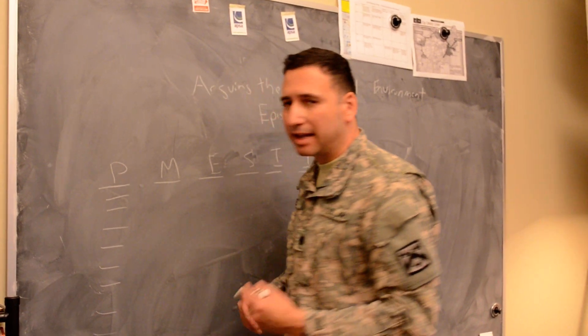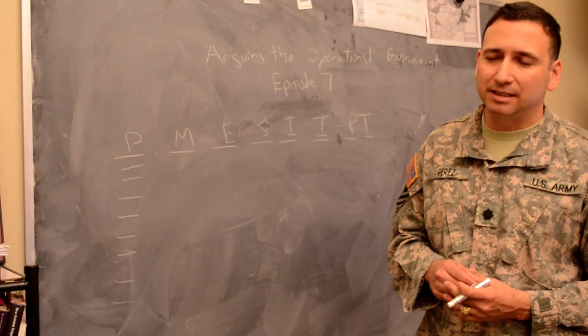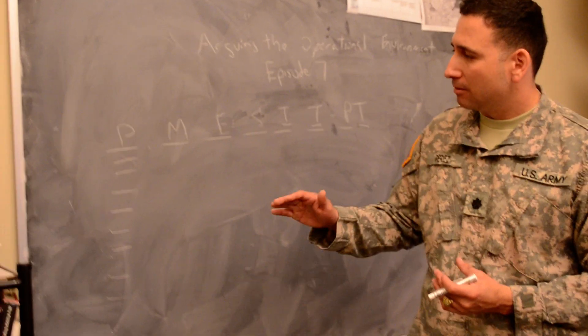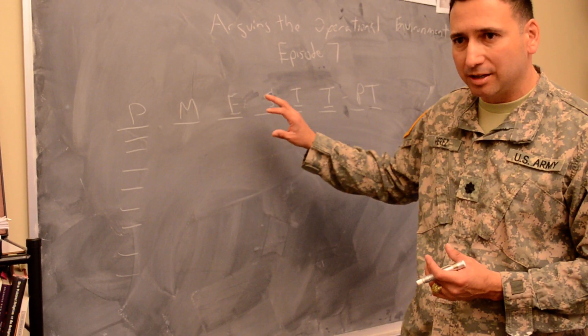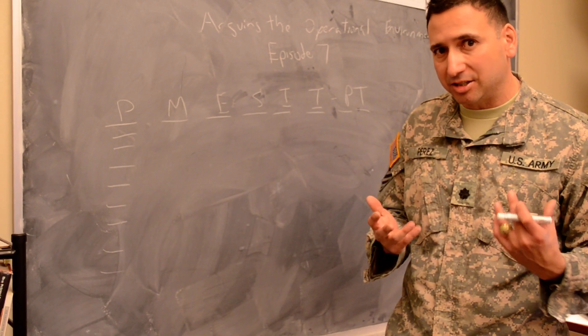So let's say we're getting an account of why there is violence in Syria. But what happens is if we use this PMESII-PT framework as a filter the way part of our doctrine tells us to do,